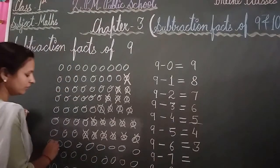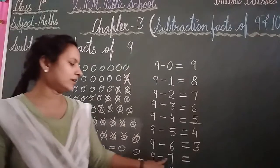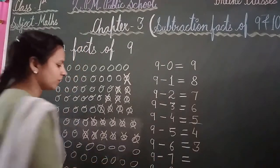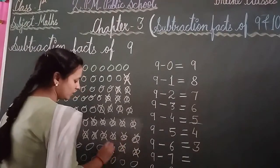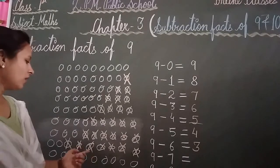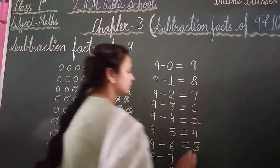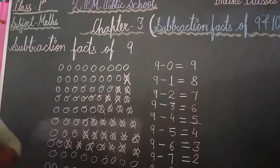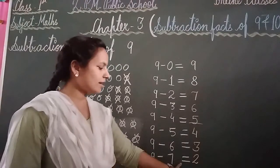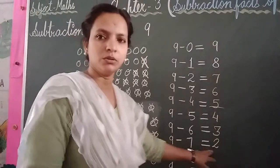Again draw your 9 balls: 1, 2, 3, 4, 5, 6, 7, 8 and 9. Write your digit: 9 minus 7. Cut and cross out 7 balls: 1, 2, 3, 4, 5, 6, 7. Count the balls left: 1, 2. How many balls are left? 2. 9 minus 7 equal to 2. The answer is 2.